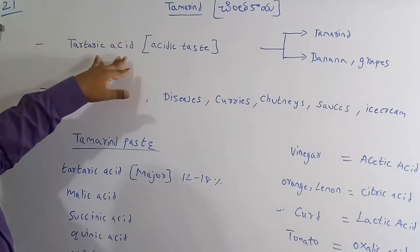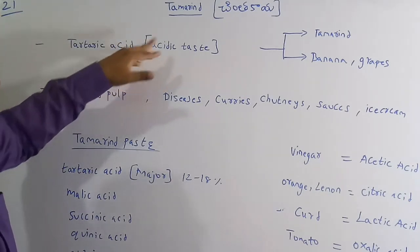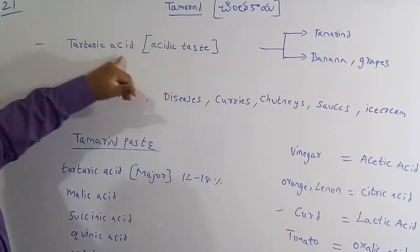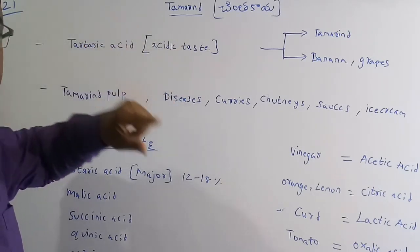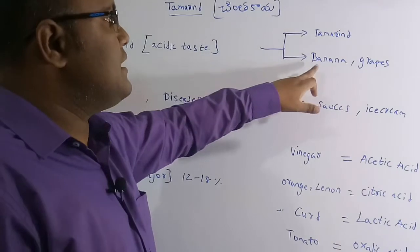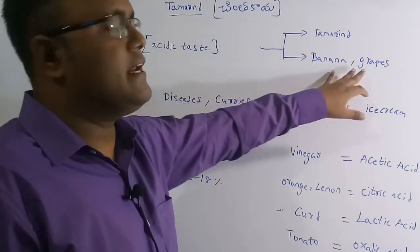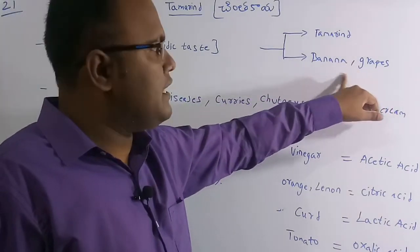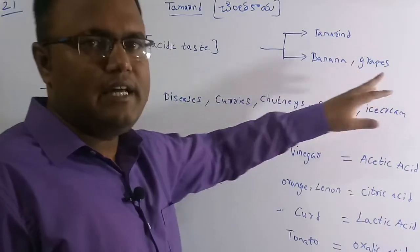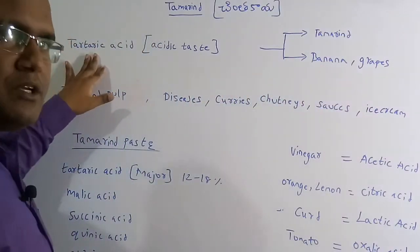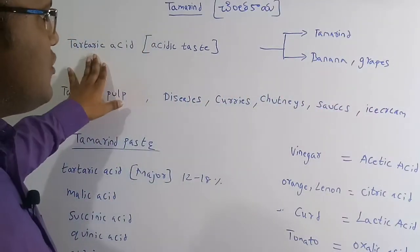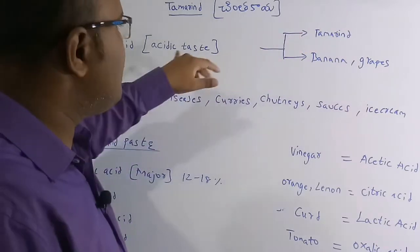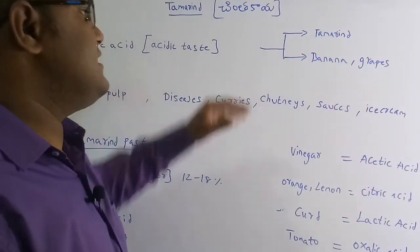This tartaric acid is also present in banana and grapes. Because of this, banana, grapes and tamarind all have an acidic taste.